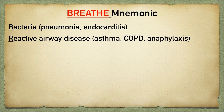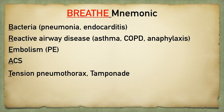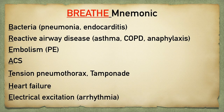R stands for Reactive airway disease — a generalized term for obstruction or bronchospasm, such as asthma, COPD, or anaphylaxis. E stands for Embolism, helping you remember pulmonary embolism. A stands for Acute coronary syndrome, to remember MI as a cause of shortness of breath. T stands for Tension pneumothorax or Tamponade — helping you remember cardiac tamponade. H stands for Heart failure. The last E stands for Electrical excitation to remember arrhythmias. You can also use that E to remember Effusion for pleural effusions.